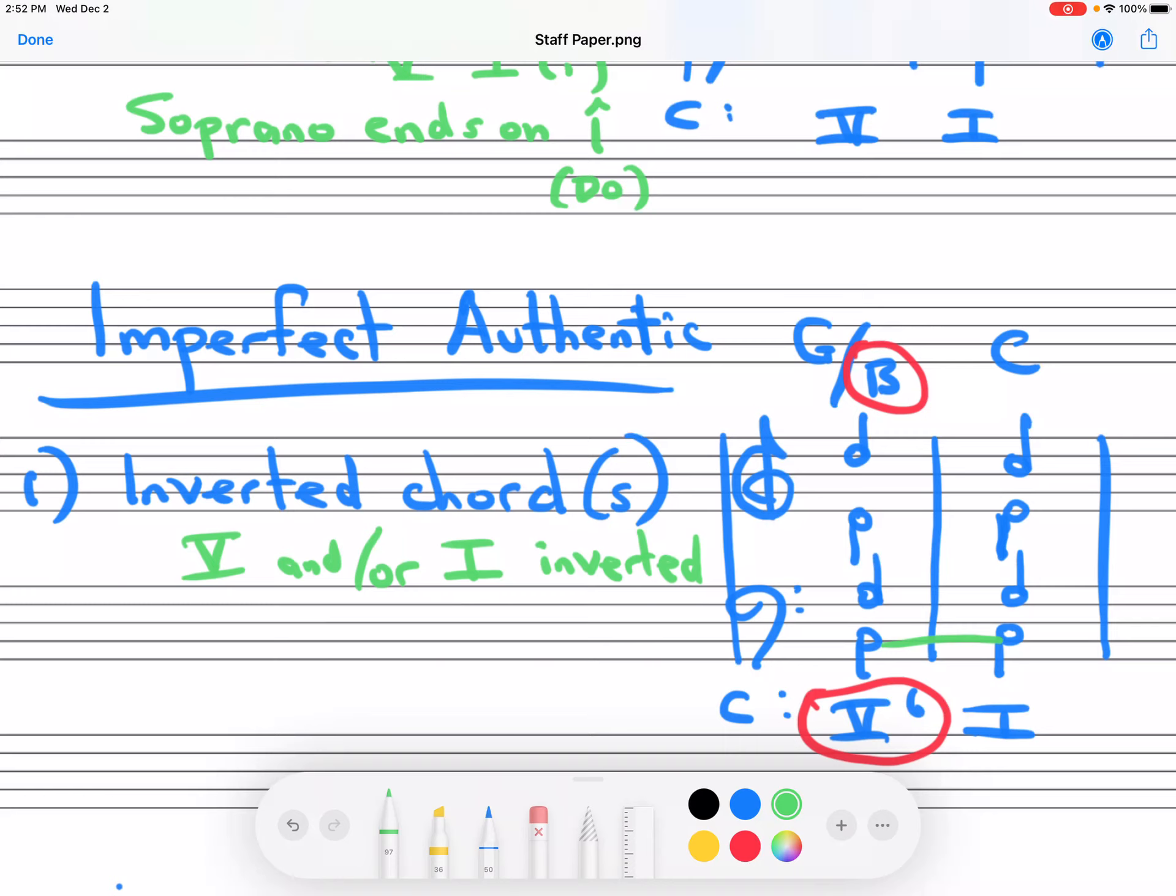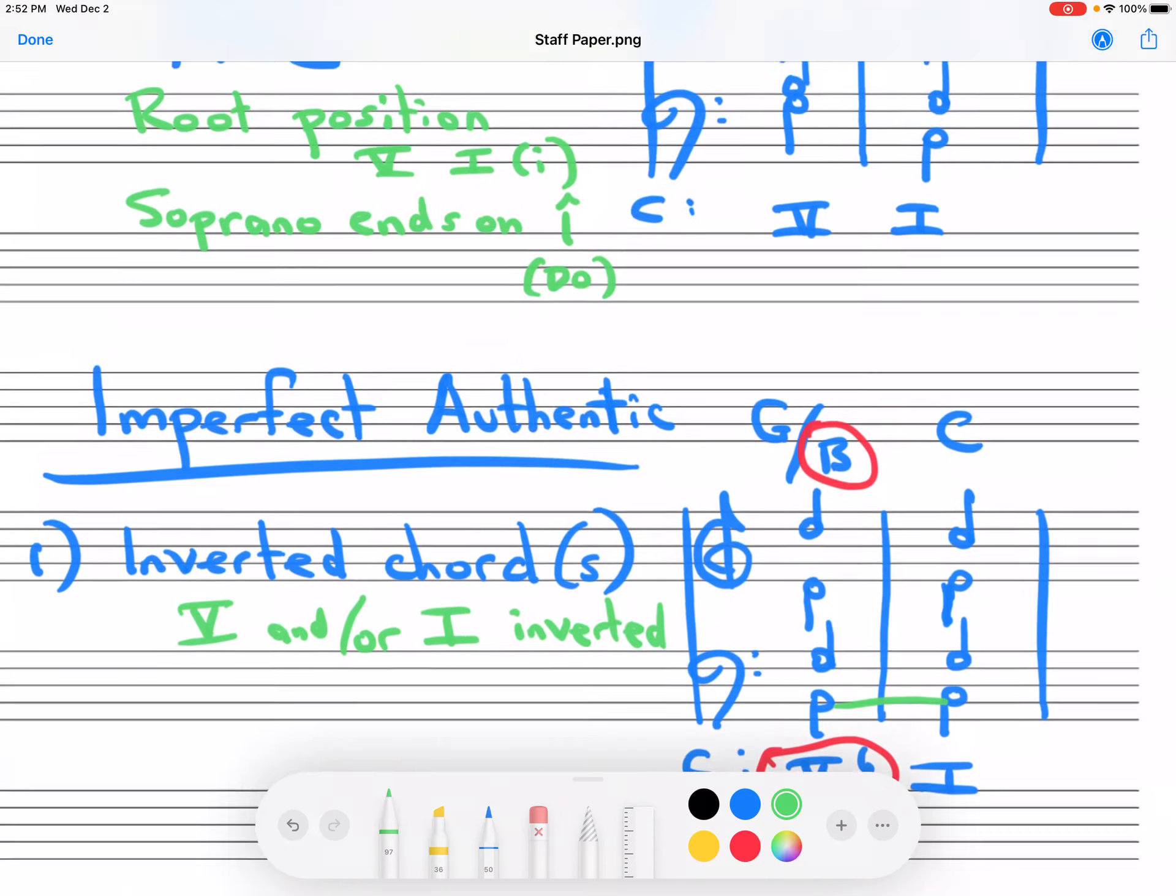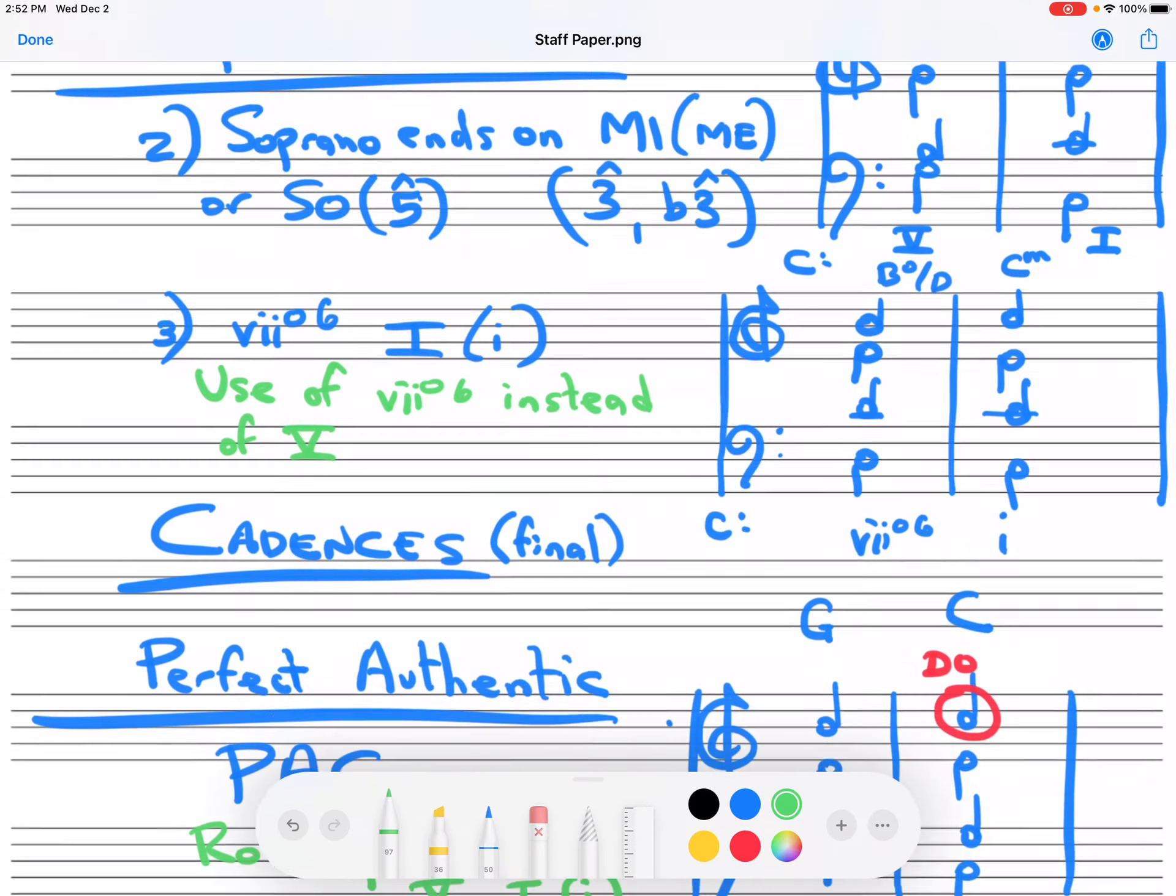So you can hear the bass stepping up. Now, as you know, the 6-4 chord, second inversion, we wouldn't normally use that chord except for very specific cases. So I'm not going to show it as a 6-4. We could also invert the one chord. So we have something like that. And that is an imperfect authentic cadence, but one or both of the chords are inverted.